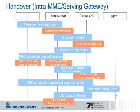First of all the UE is reporting measurements. This means neighbor cell measurements according to the measurement configuration provided by the base station. And the base station is then evaluating the measurement reports. The base station will decide about a handover in case, for example, a neighboring cell shows much better quality than the source cell.